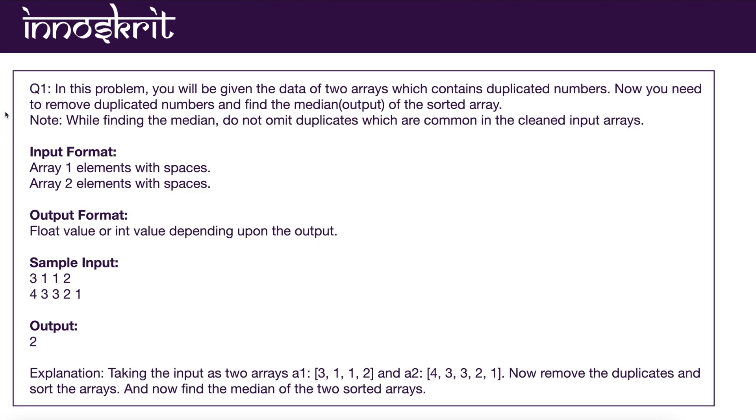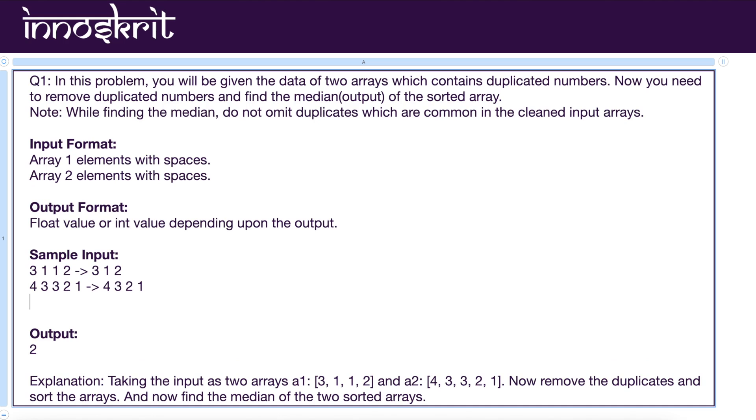So for example, array one would become 3 1 2 and array two would become 4 3 2 1. When you sort these arrays and merge them, after merging and sorting it would become something like this: 1 2 2 3 3 and 4.